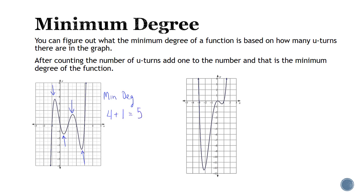Remember that the degree of a function is the highest exponent. For the second graph, we have 1 u-turn here, 1 here, and 1 here, so the minimum degree will be 3 plus 1, or 4. In order to find the minimum degree, you count how many u-turns and then add 1.